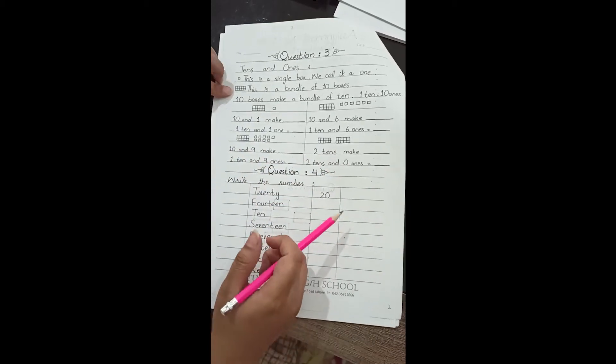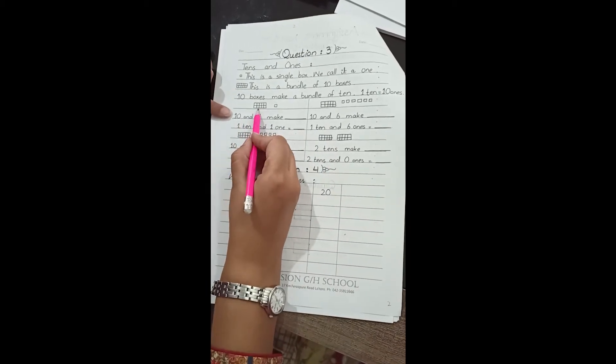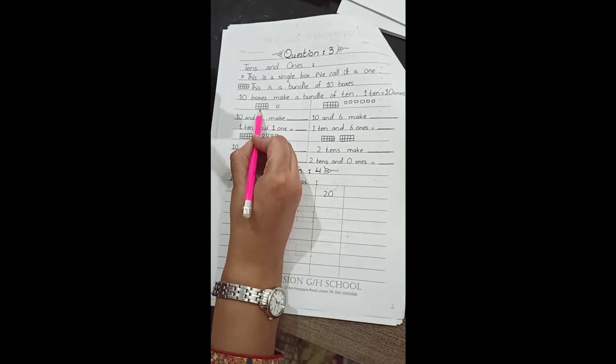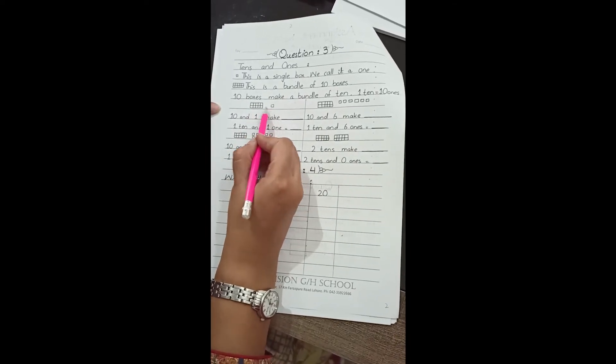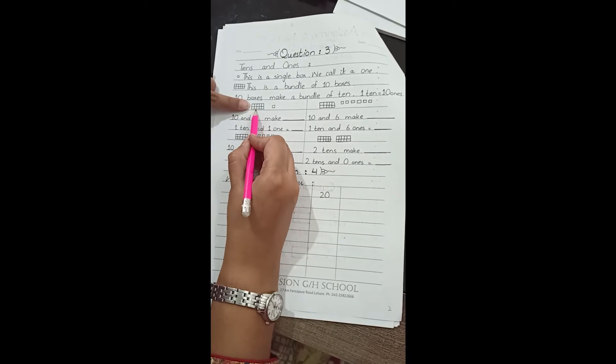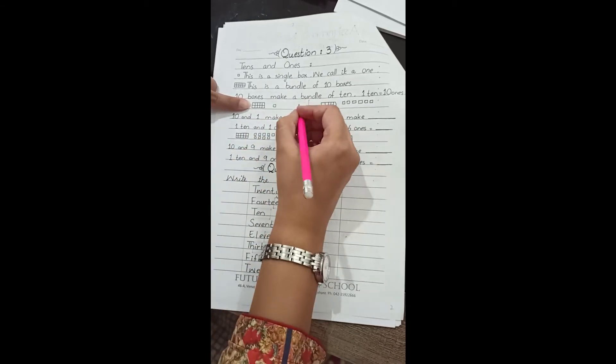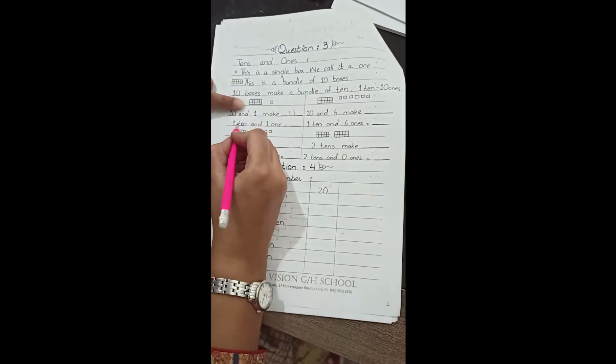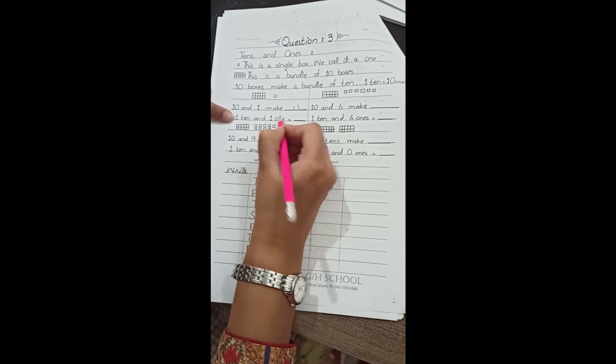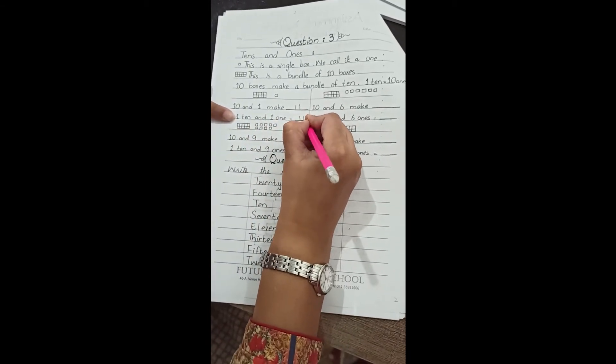Now moving toward the question. A bundle of 1 ten and 1 box equals 1, so this is a single box. 10 plus 1 equals 11. 1 ten and 1 one equals 11.